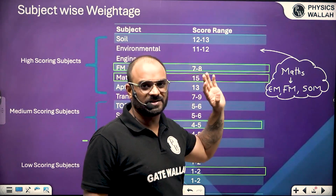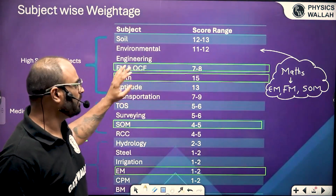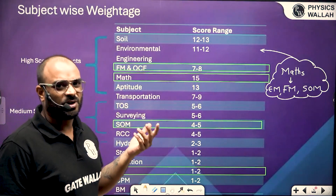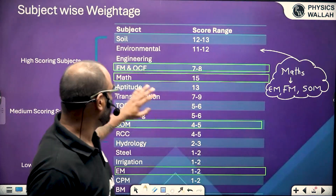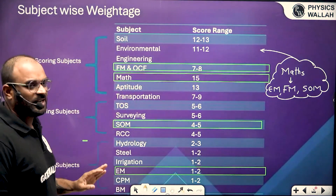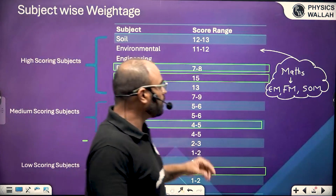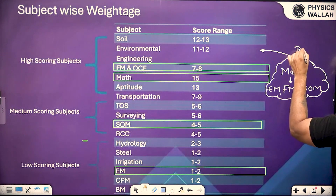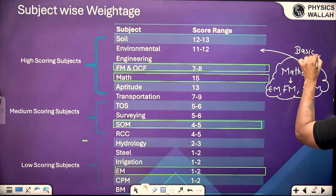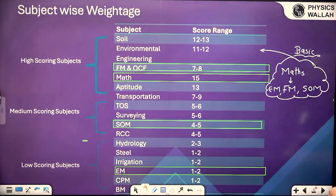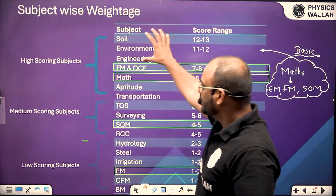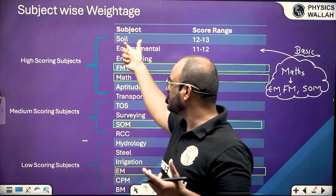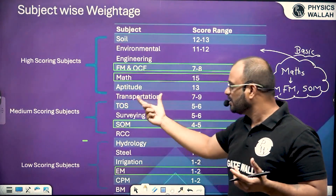Aptitude is an individual subject — there is no requirement of any other concept. It is based upon logical and reasoning things, so you can cover it at any time. But first try to cover the base subjects — make your base strong. Then go with the high scoring subjects whose weightage is very high, like soil mechanics, environmental engineering, transportation, and so on.